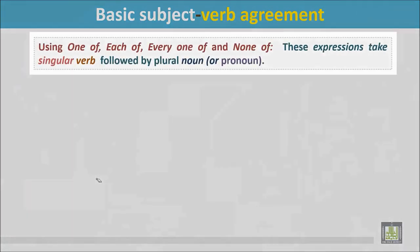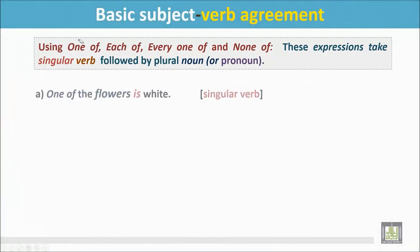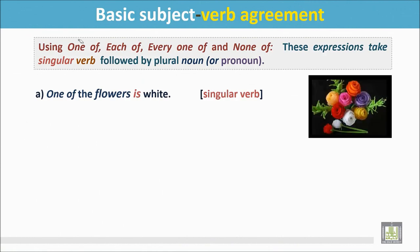Using 'one of,' 'each of,' 'every one of,' and 'none of.' These expressions take a singular verb and are followed by a plural noun or pronoun. See the example: One of the flowers is white. In the picture, there are many flowers but one of the flowers is white. The sentence begins with 'one,' and though 'flowers' is a plural noun, it is followed by a singular verb: 'is.'